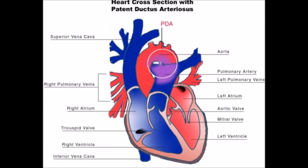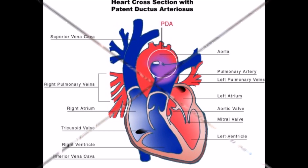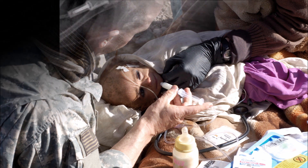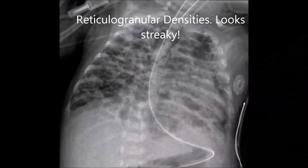So what makes you more prone to BPD? If you have a PDA — a patent ductus arteriosus — poor nutrition in utero, a family history of asthma, and fluid overload in the first few days of life.